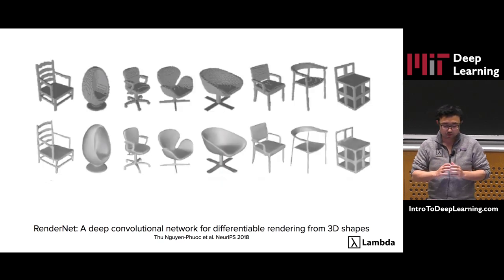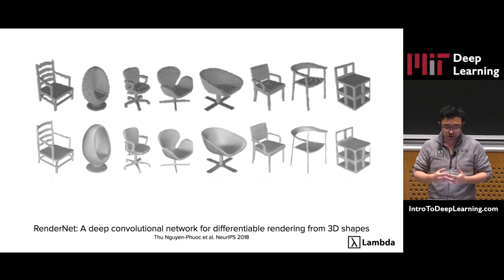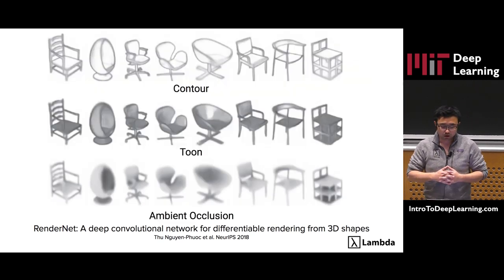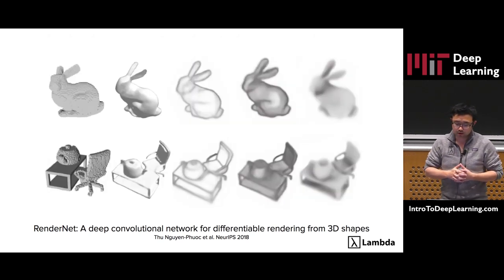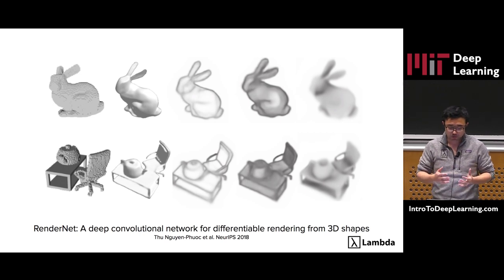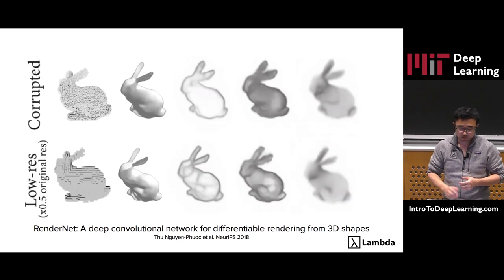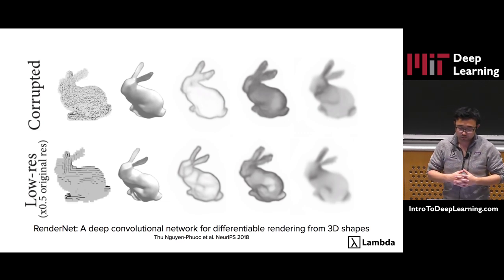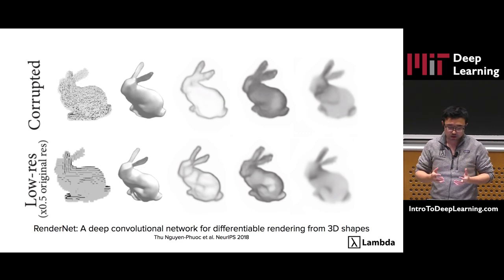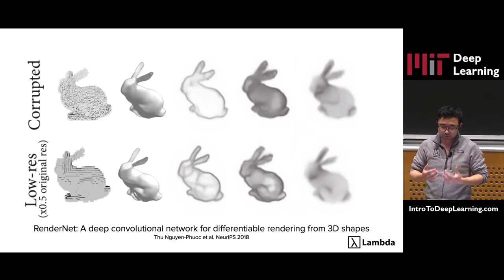Here are some results. The first row is the input voxels. The second row is the output of RenderNet. As you can see, RenderNet is able to learn how to compute visibility and shading. We can also train RenderNet to generate different rendering effects such as contour map, tone shading, and ambient occlusion. In terms of generalization performance, we can use a RenderNet trained on chair models to render unseen objects such as the bunny and a scene with multiple objects. It can also handle data with corruption and low resolution — the first row renders an input shape that is randomly corrupted, and the second row renders an input shape that has a resolution 50% lower than the training resolution.